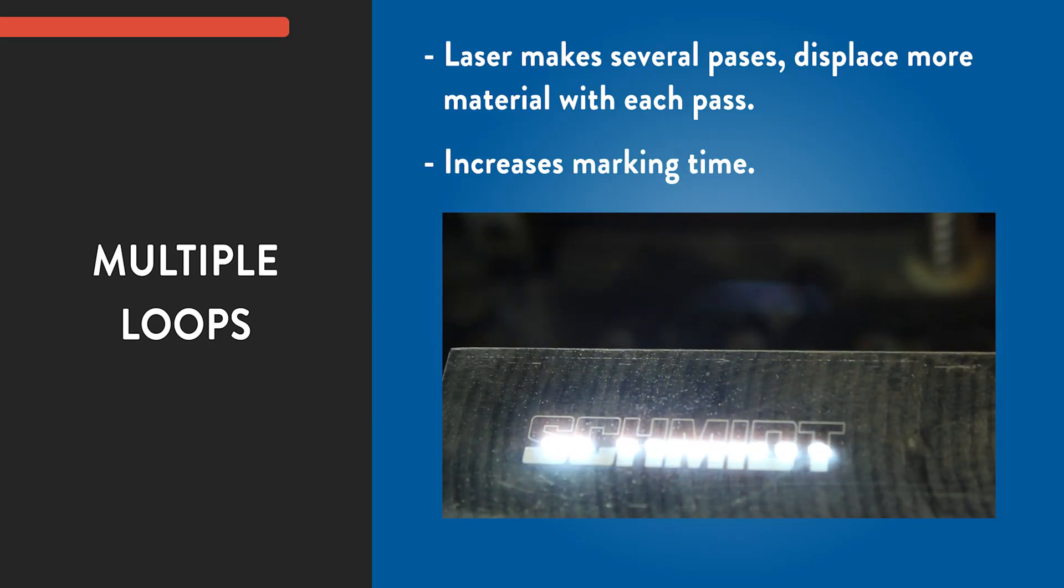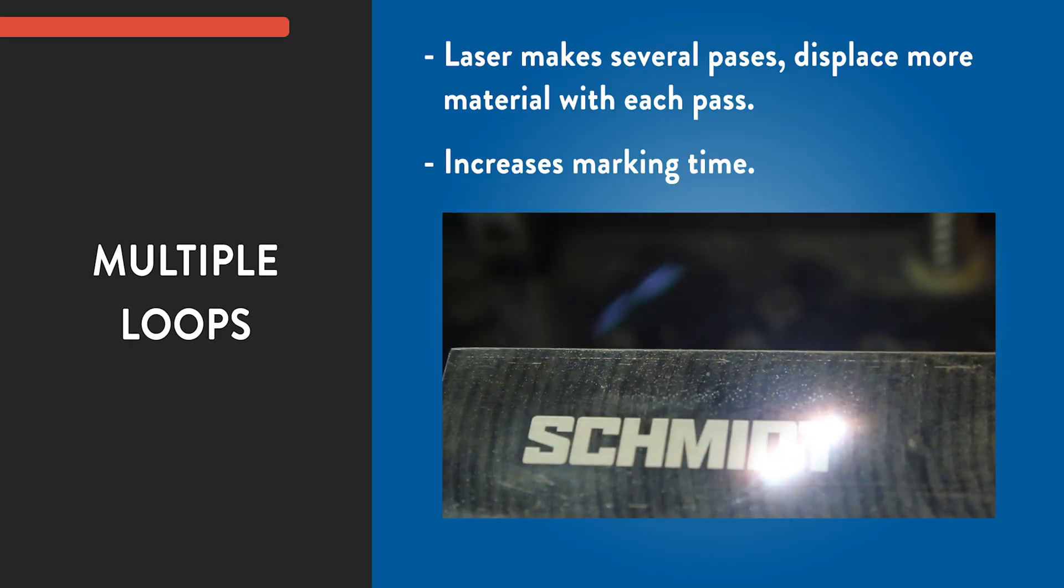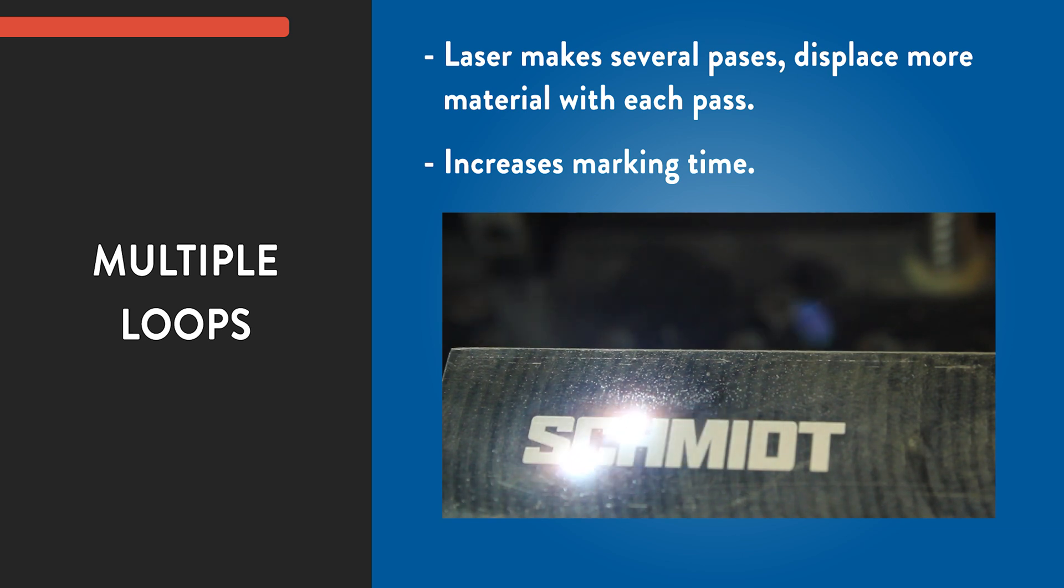Making multiple loops with your laser creates depth by repeatedly going over the mark, displacing more and more material with each pass. As with slowing your laser speed, making multiple loops will increase the amount of time it takes to complete your mark. However, because the laser isn't spending a long time at any one spot, you're less likely to get a burnt, rough mark.